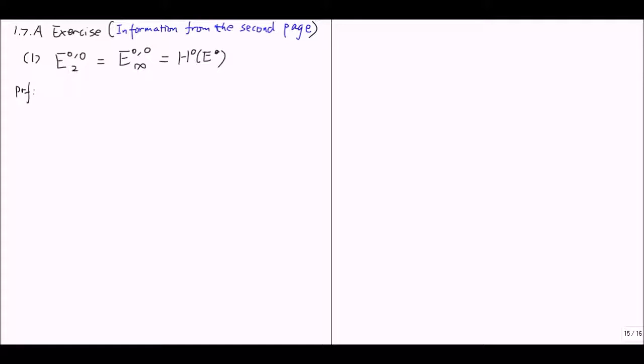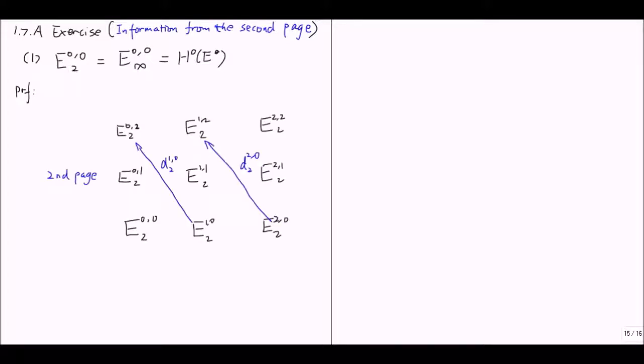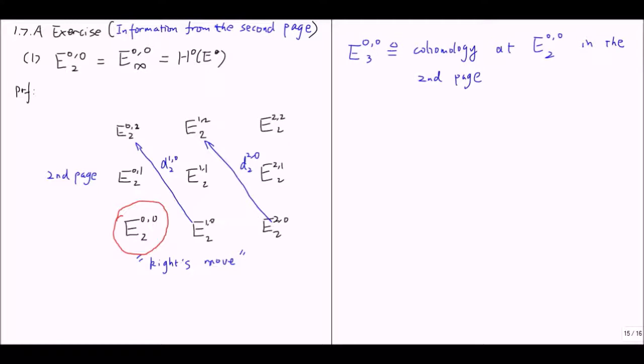So now let's prove this. Here is the second page where the arrows are nicely arranged. Let's look at the object at the origin: the object E⁰⁰ sub 2. We consider the cohomology at this place, which is E⁰⁰₃. By definition of cohomology, this is just the kernel modulo the image.